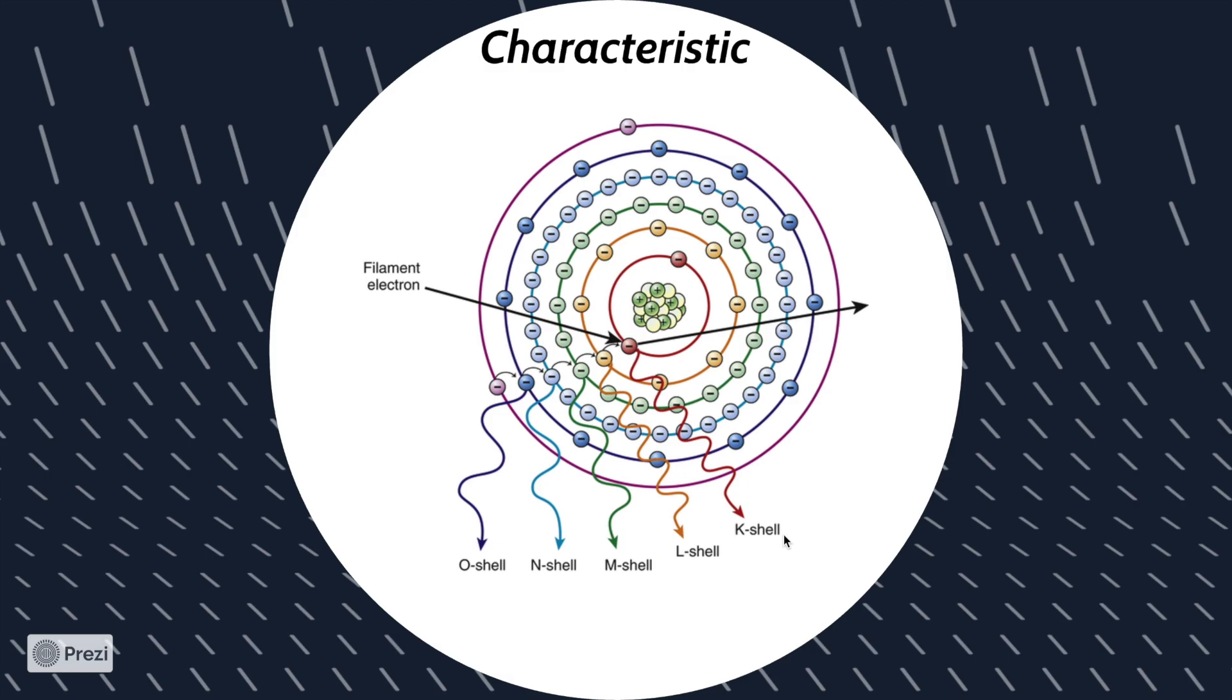For example, since the K shell is 69.5 keV, you subtract that by the L shell, which is 12.5 keV, giving you 57.5 keV.